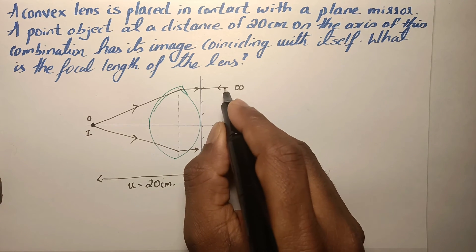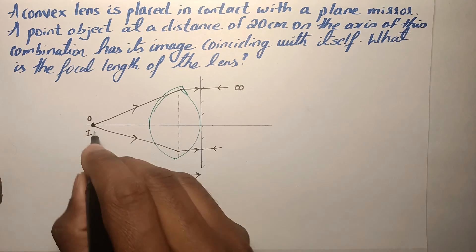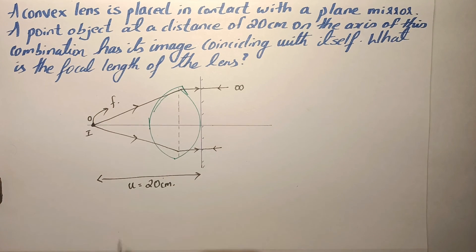So technically, if this ray comes back as shown in the figure, then this point is also the focus of the lens.